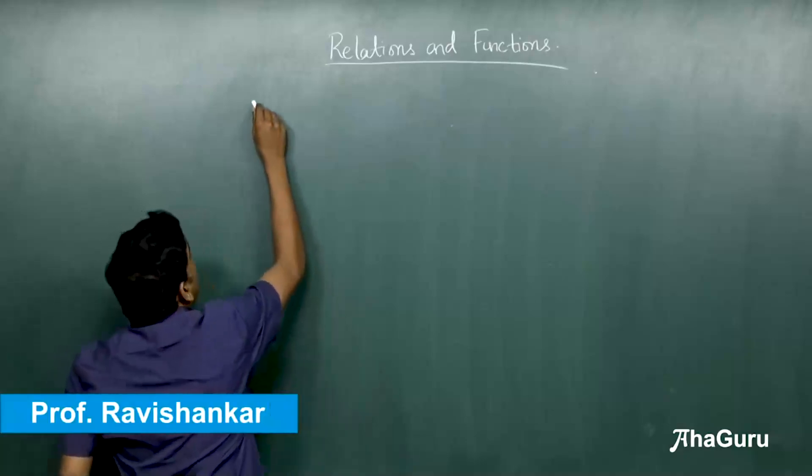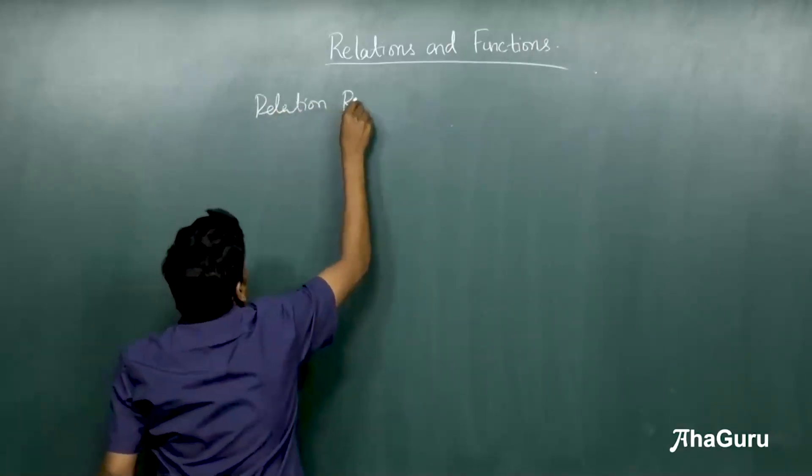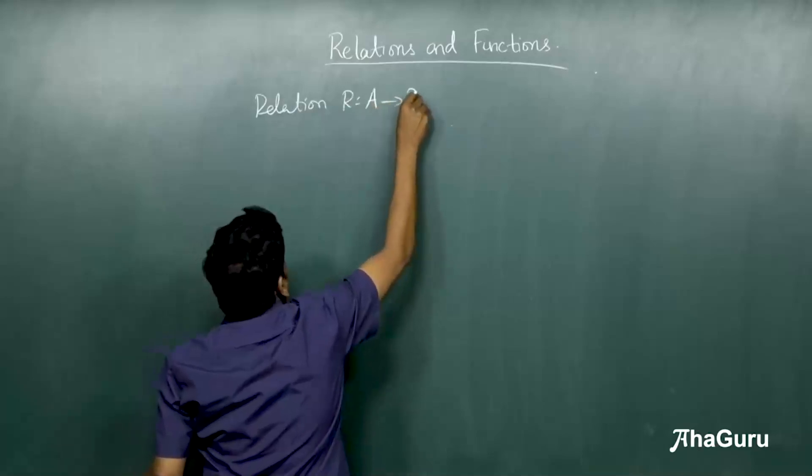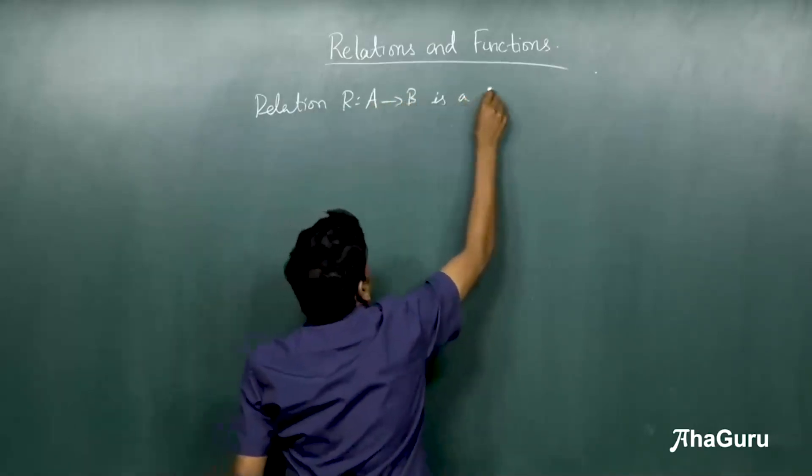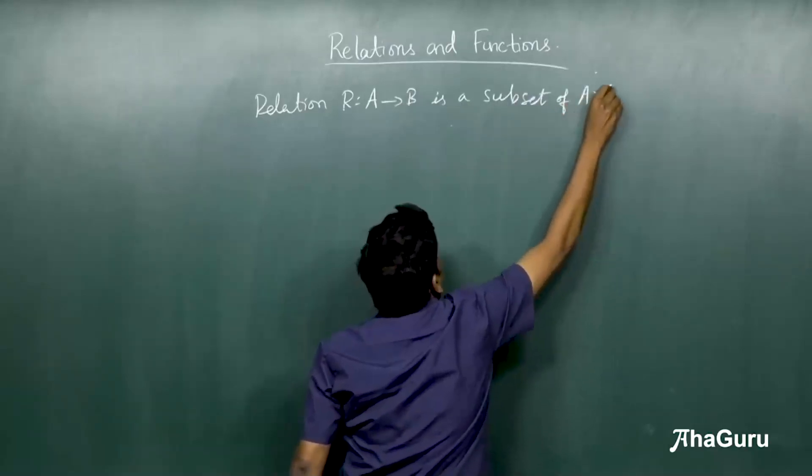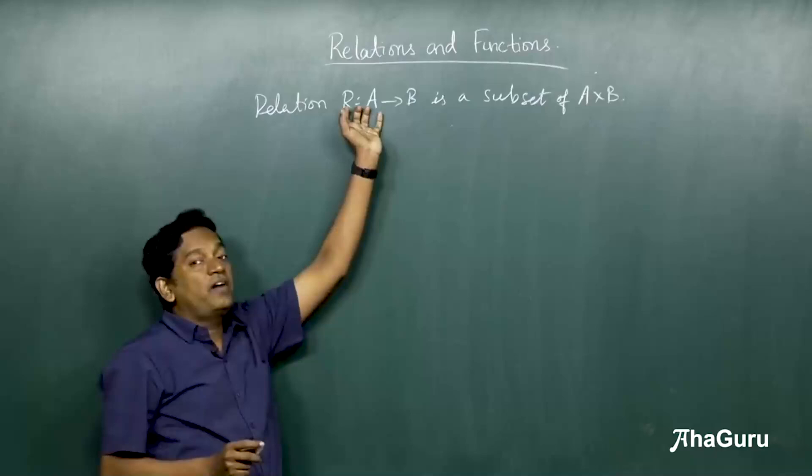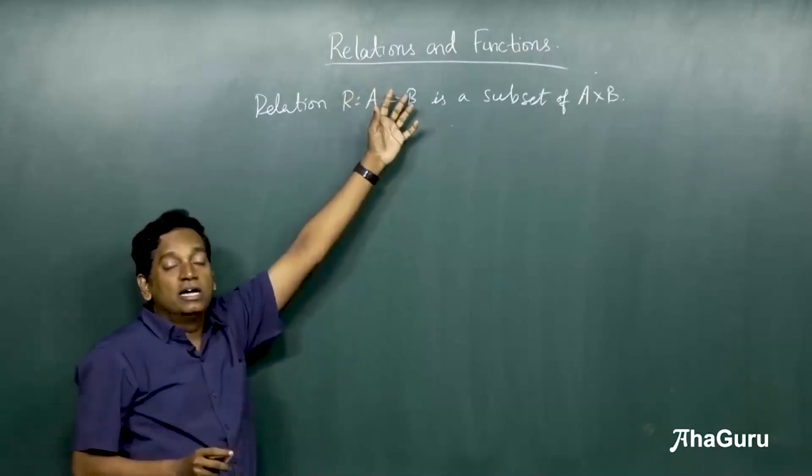What do we already know about a relation? We know that a relation R from A to B is nothing but a subset of A cross B, and the elements of R are all ordered pairs.